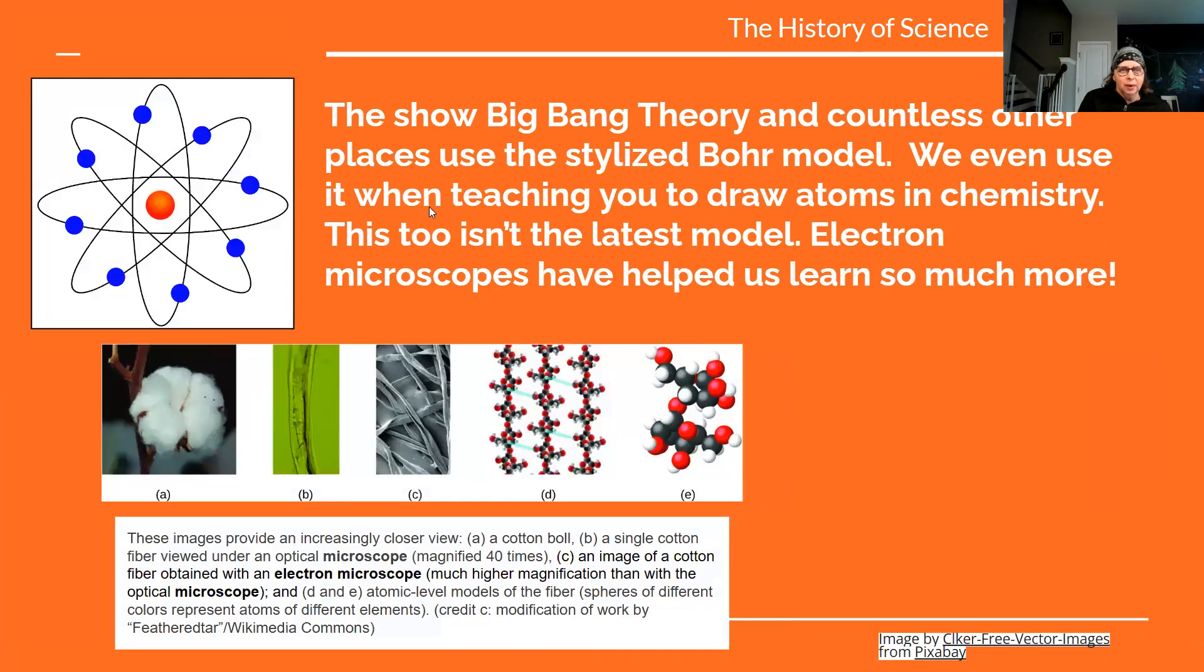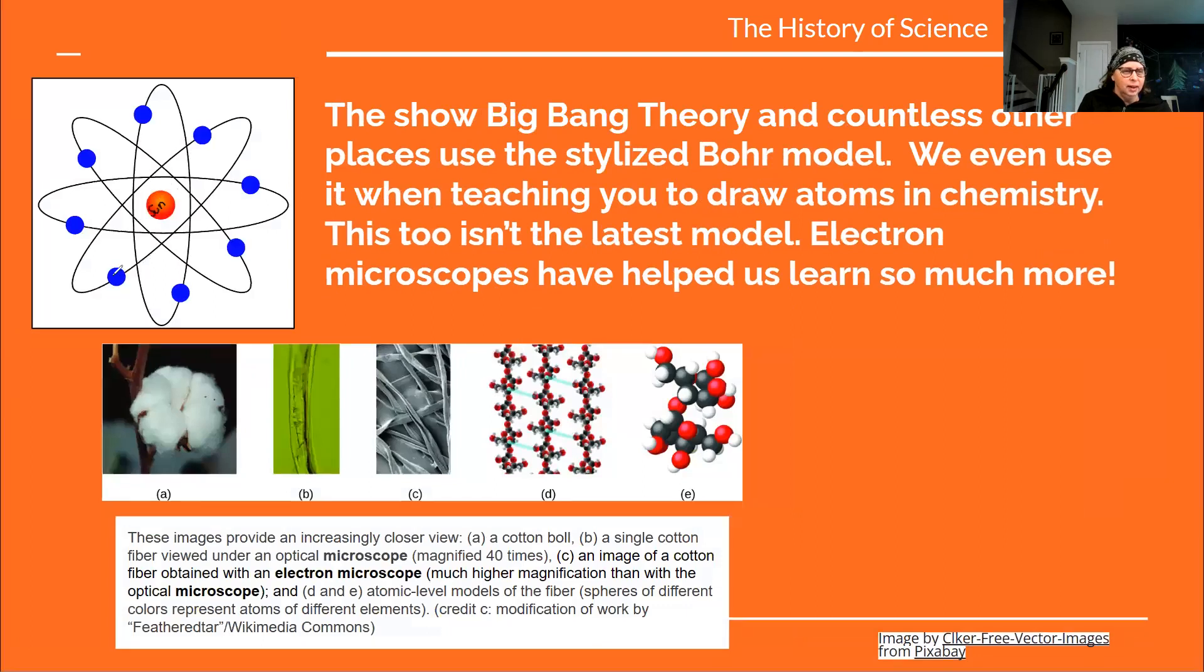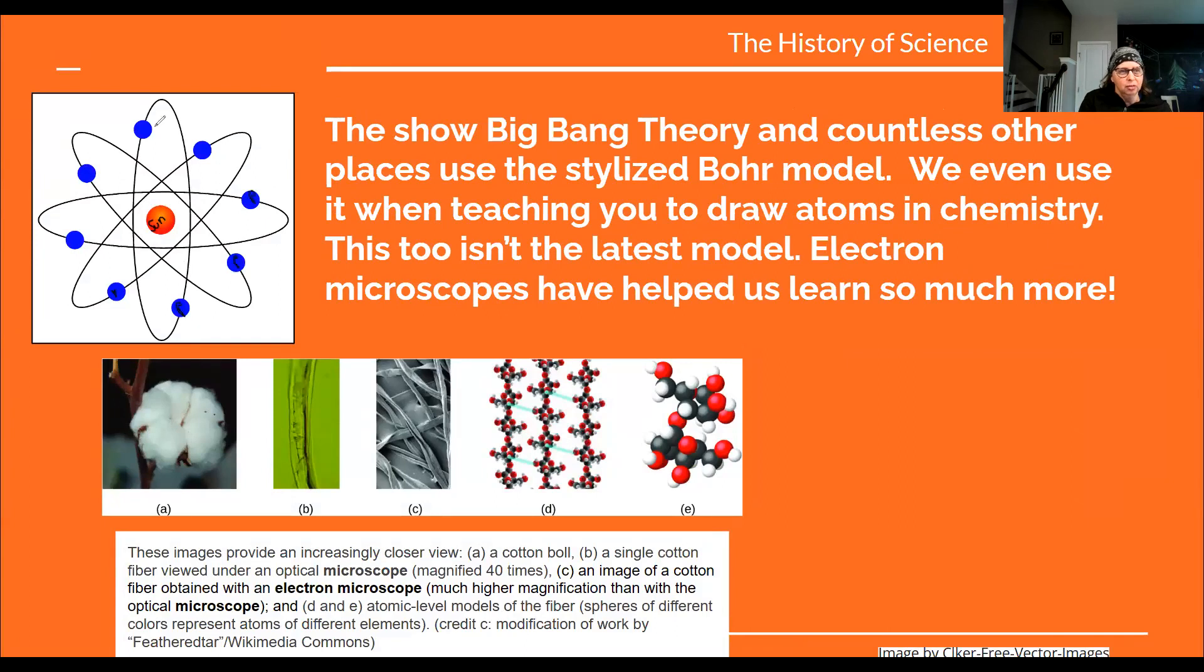One of the next models was the Bohr model, and it's kind of like a solar system. This was the sun and then these were each of the little planets that were revolving around it in orbit. This model is actually still useful today. In fact, you probably drew a couple Bohr models in chemistry class just to get an idea of where each items were. But after using electron microscopes and a couple other things, we found that that's accurate. Even though we are still using it, it's just not as accurate as our current information has told us.